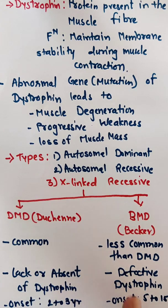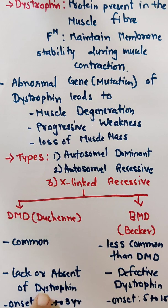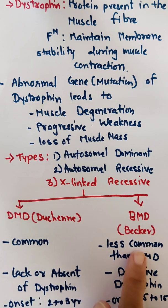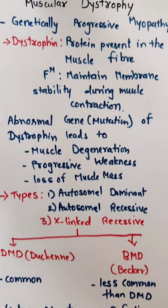So the main difference is that in Duchenne muscular dystrophy the dystrophin protein is absent, while in BMD there is a defective dystrophin present.